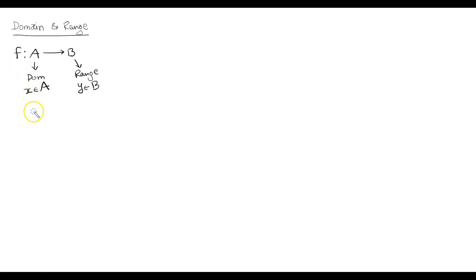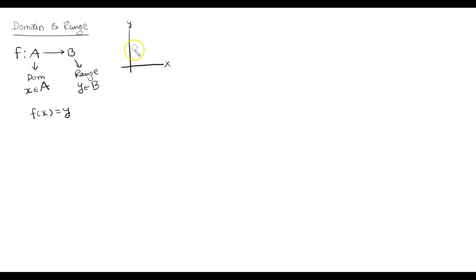We might sometimes want to write f of x equals to y. If we graph the function f in the Cartesian plane, then the domain will be represented by the x-axis and the range will be represented by the y-axis. This is small x and this is small y — so this is the domain and this is the range.